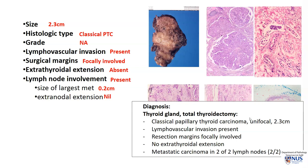And this is what the final summary of the entire pathology report would look like: thyroid gland, total thyroidectomy, the type of tumor, the focality — whether it's uni- or multifocal — the size, presence of lymphovascular invasion, resection margins, extra-thyroidal extension, and also the lymph node status. All this information would be very helpful to the managing clinical team in terms of whether to proceed with radioiodine treatment or subsequent follow-up management.